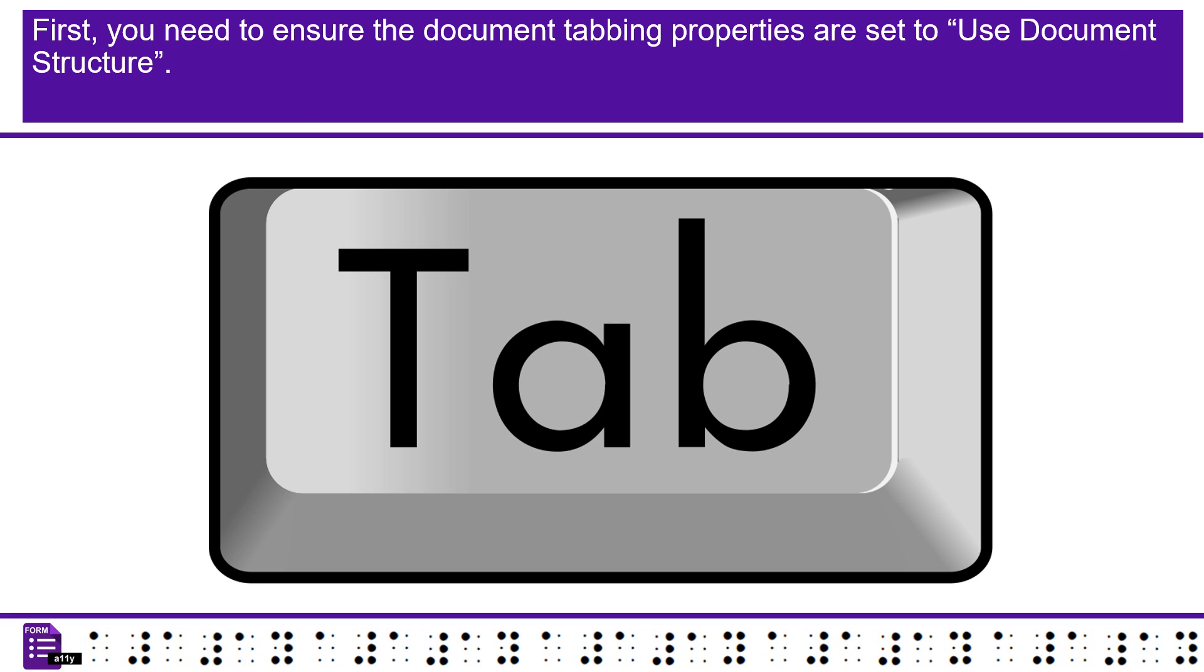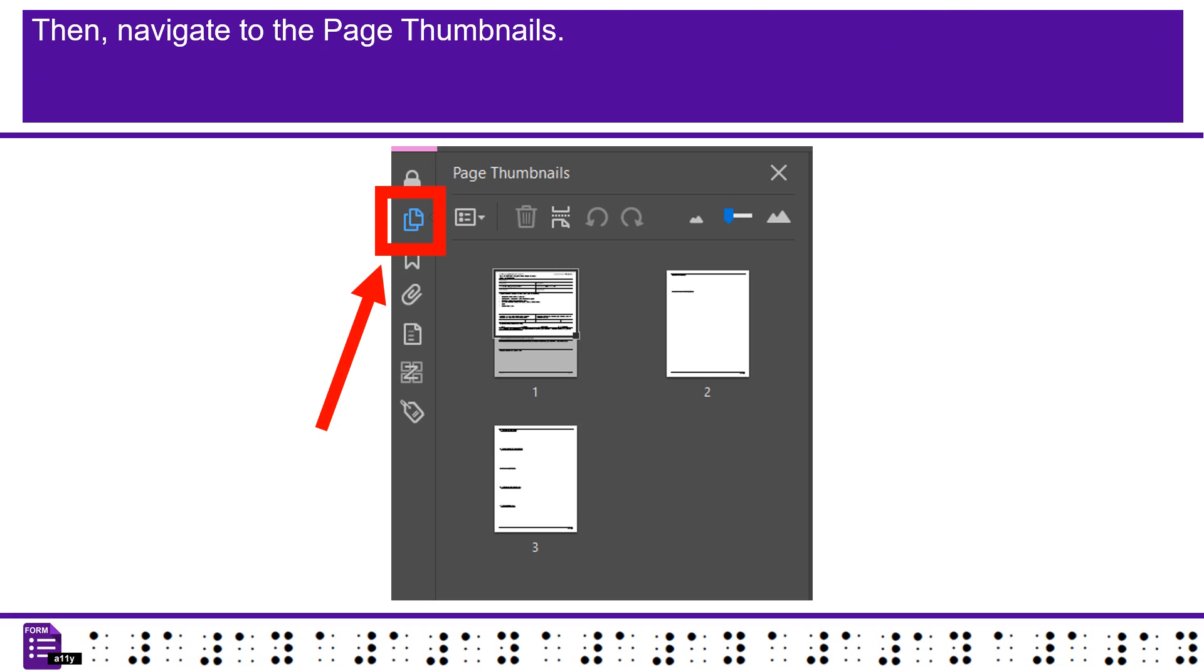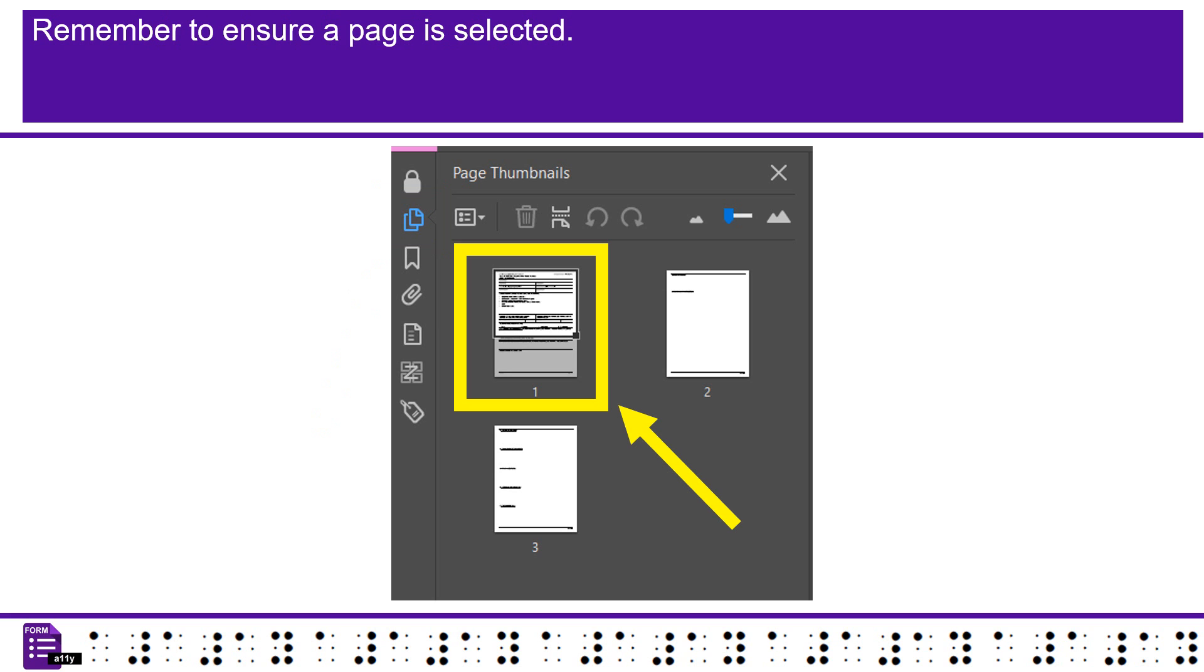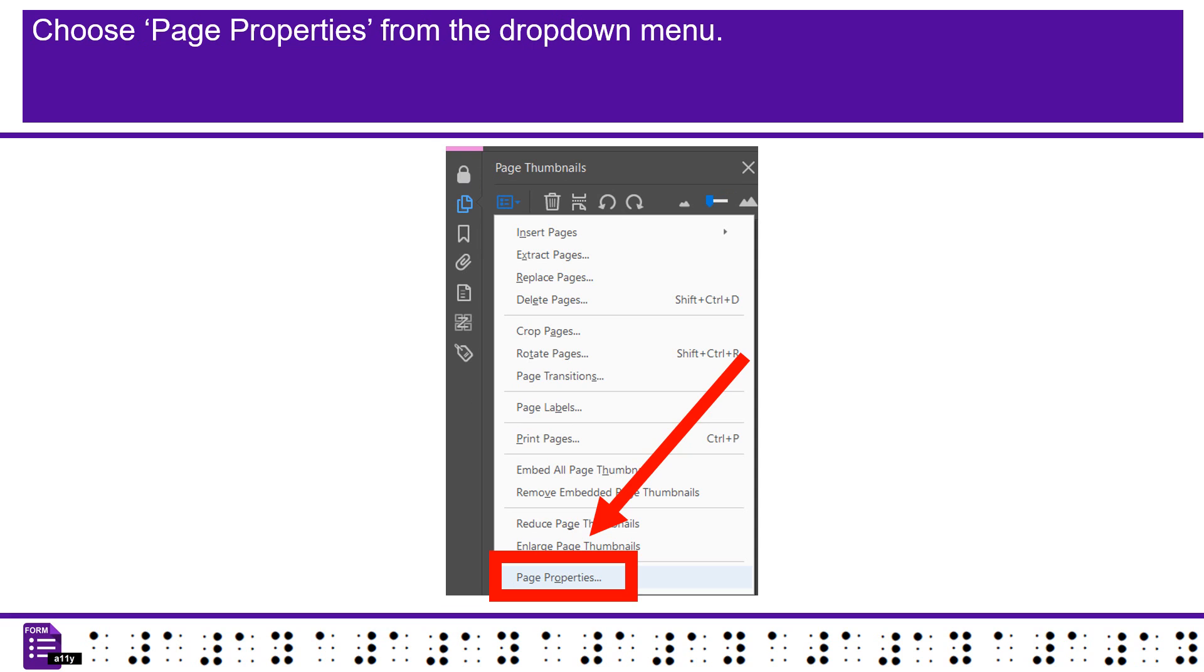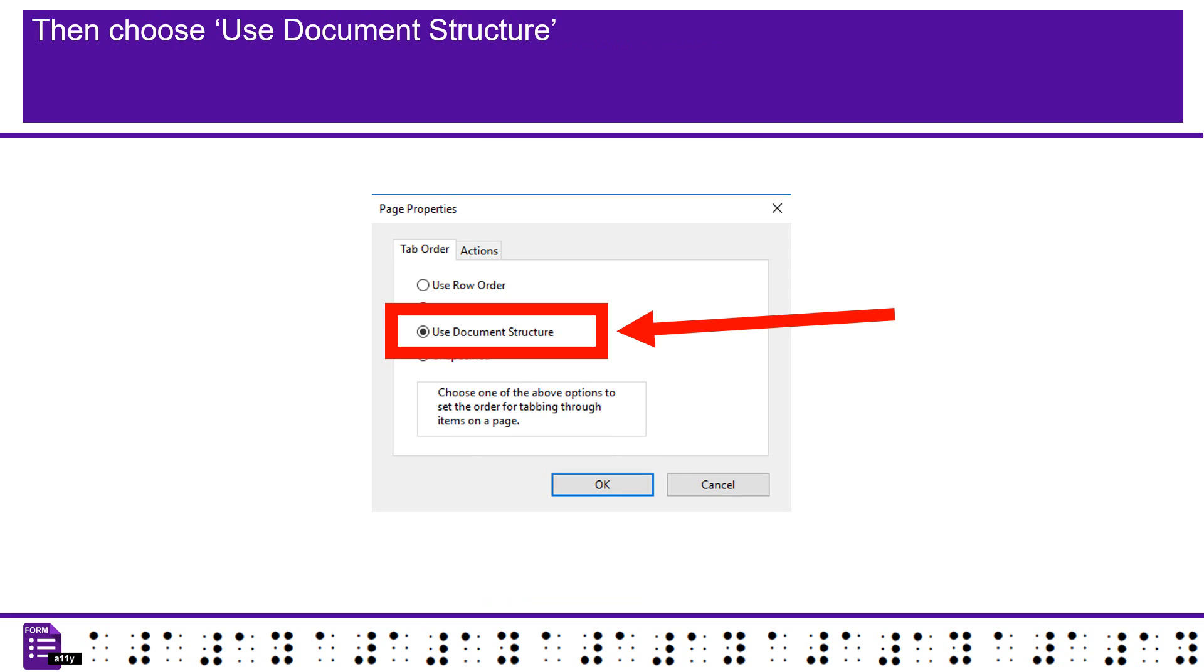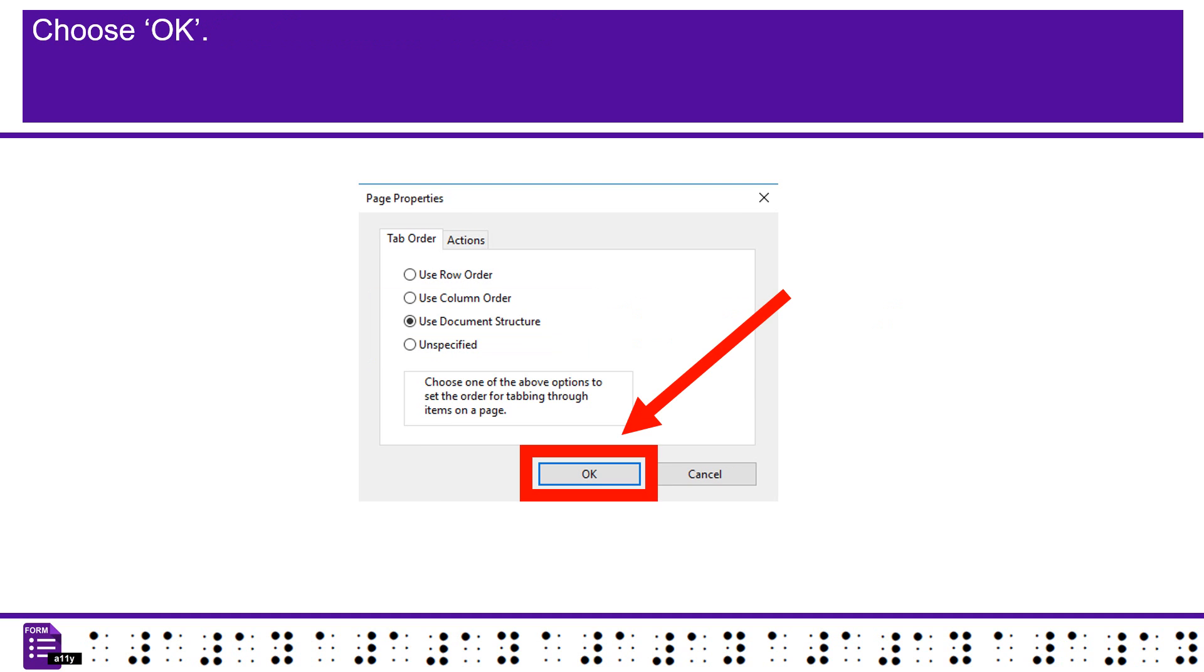First, you need to ensure the document tabbing properties are set to use document structure. Then, navigate to the page thumbnails. Remember to ensure a page is selected. Choose Page Properties from the drop-down menu. Then choose Use Document Structure. Choose OK.